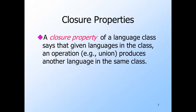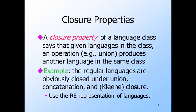Closure properties are statements that when we apply certain operations to languages in the class, the result is also in the class. For example, we say that a class of languages is closed under union if, given two languages in the class, the union of those languages is also in the class. So if I have two regular languages, I can represent them by regular expressions and connect those expressions by a plus with the appropriate parentheses to get a regular expression for their union. Similar constructions work for their concatenation and closure.